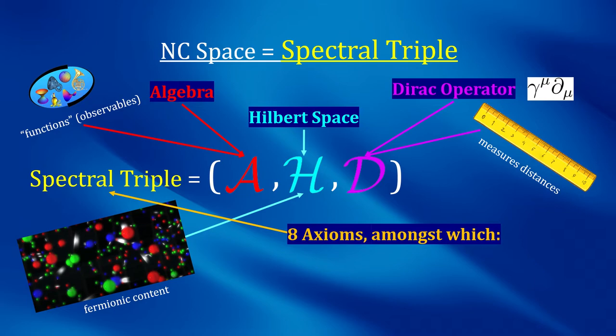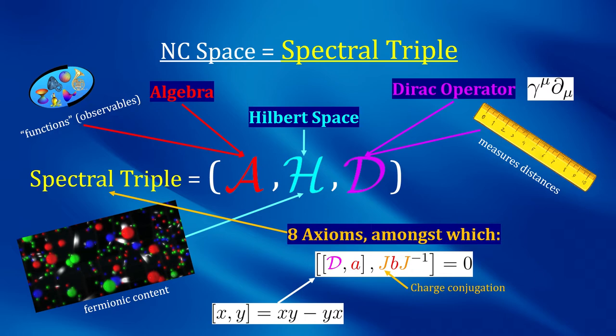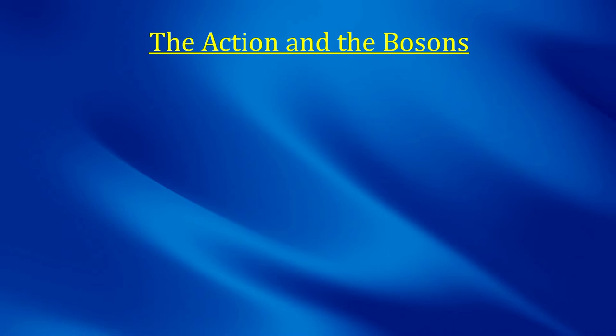The spectral triple is also required to satisfy eight axioms. Here I will only report one of them, since it is the starting point of my work. In this formula, D is the Dirac operator, A and B are elements of the algebra, and J is the charge conjugation operator. The square brackets denote the commutator. The details of the formula aren't important. Just keep in mind that there is such an axiom.